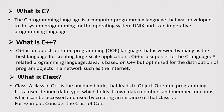What is C++? C++ is an object-oriented programming language that is viewed by many as the best language for creating large-scale applications. C++ is a superset of C language. The related programming language Java is based on C++ but optimized for the distribution of program objects in a network such as the internet.